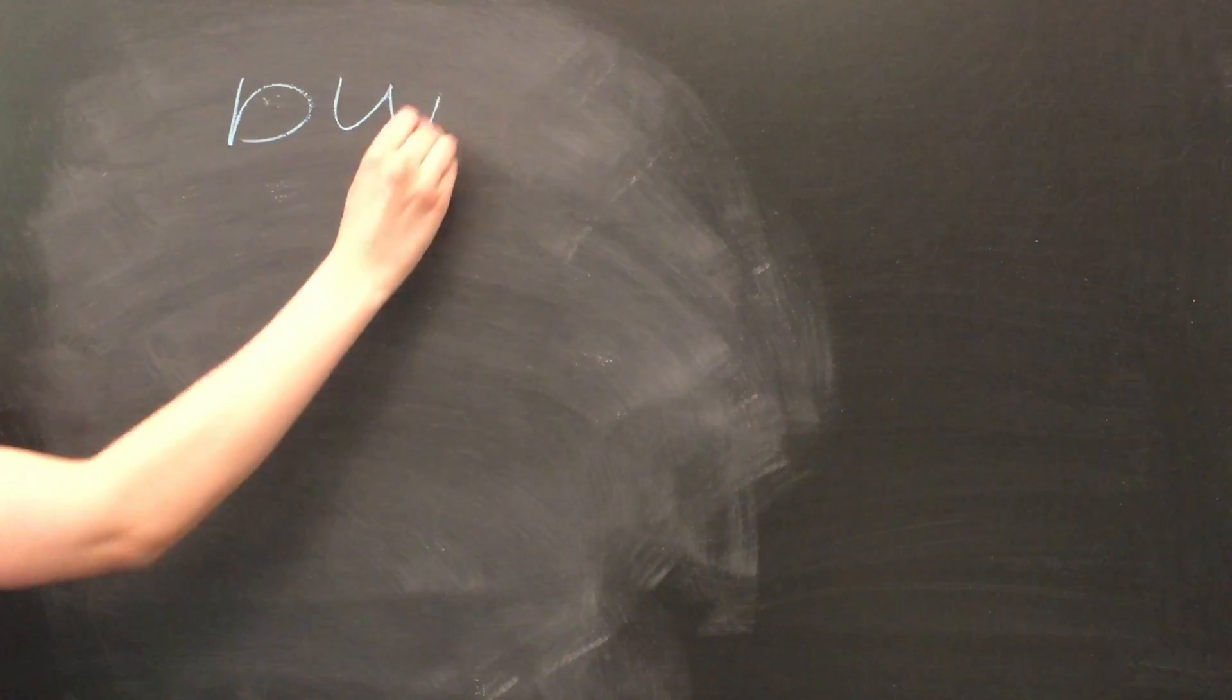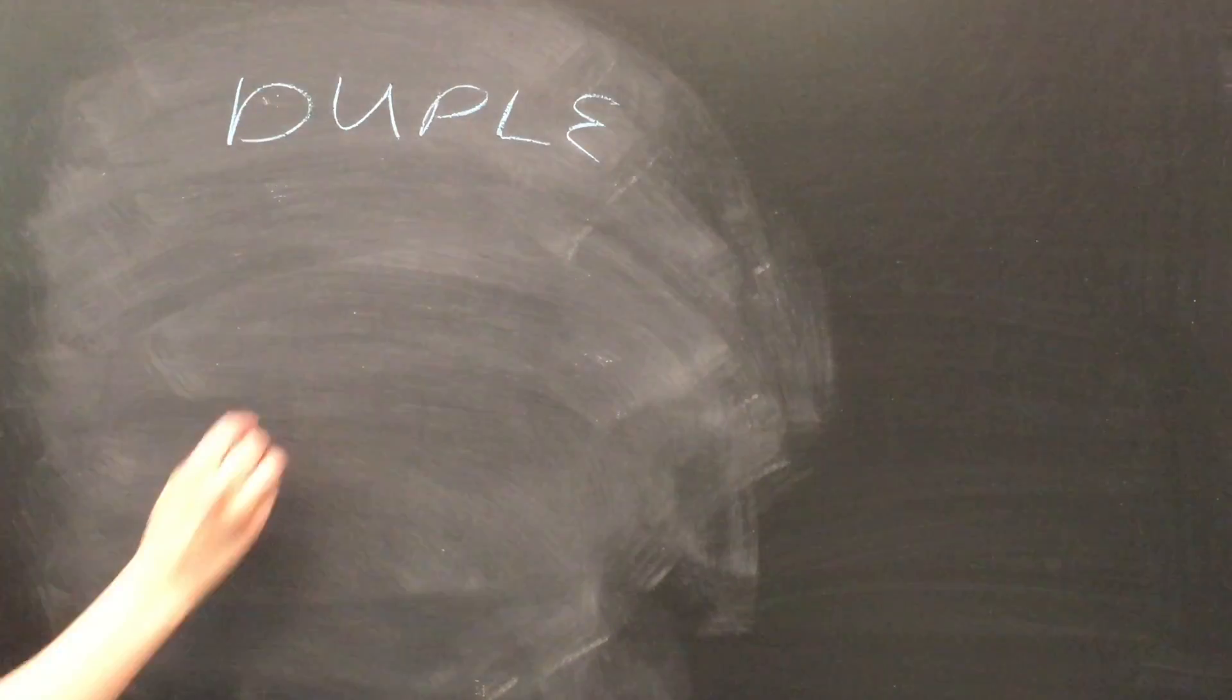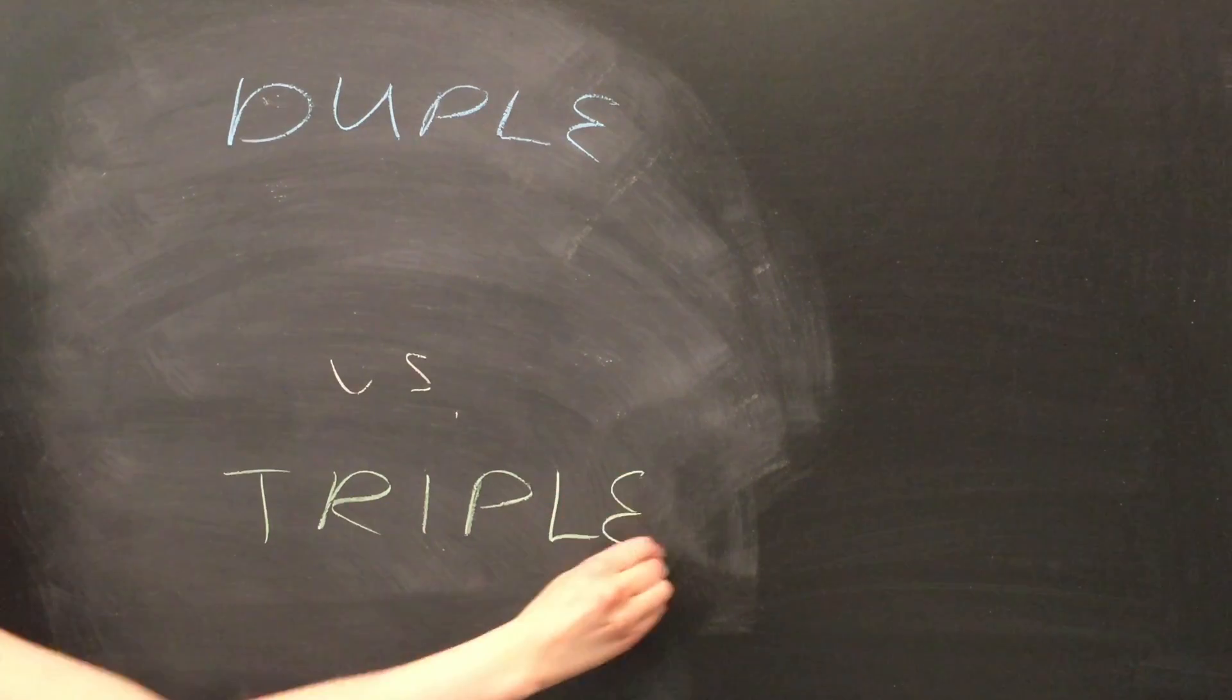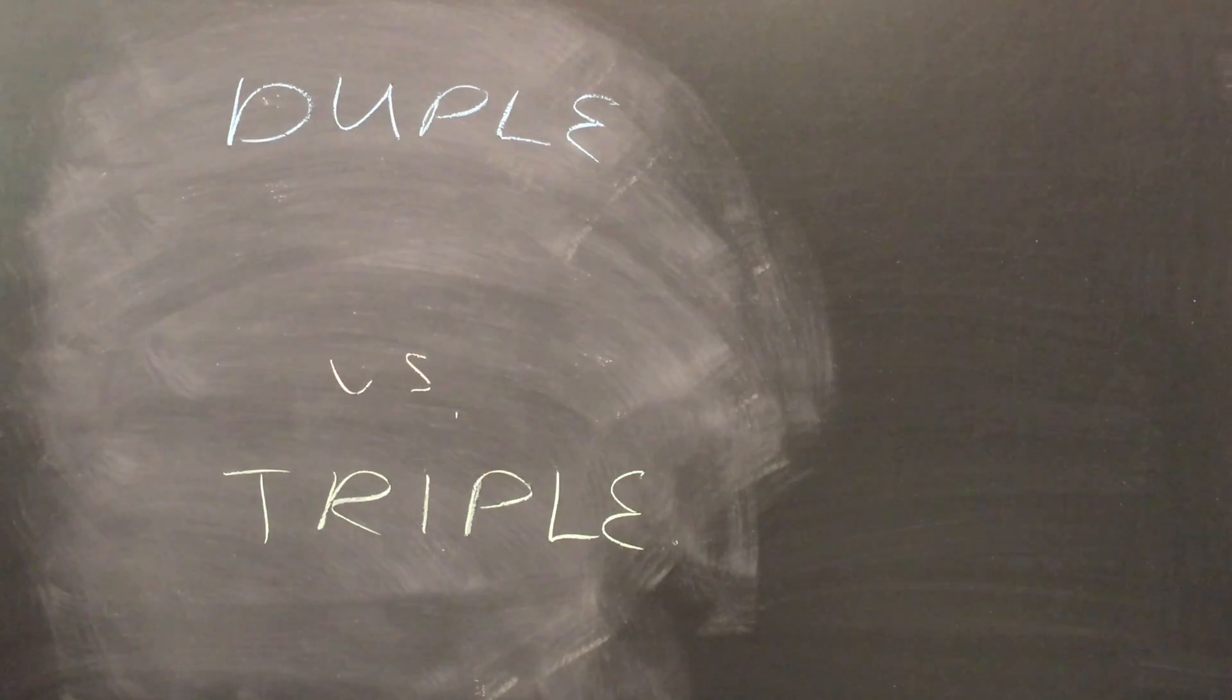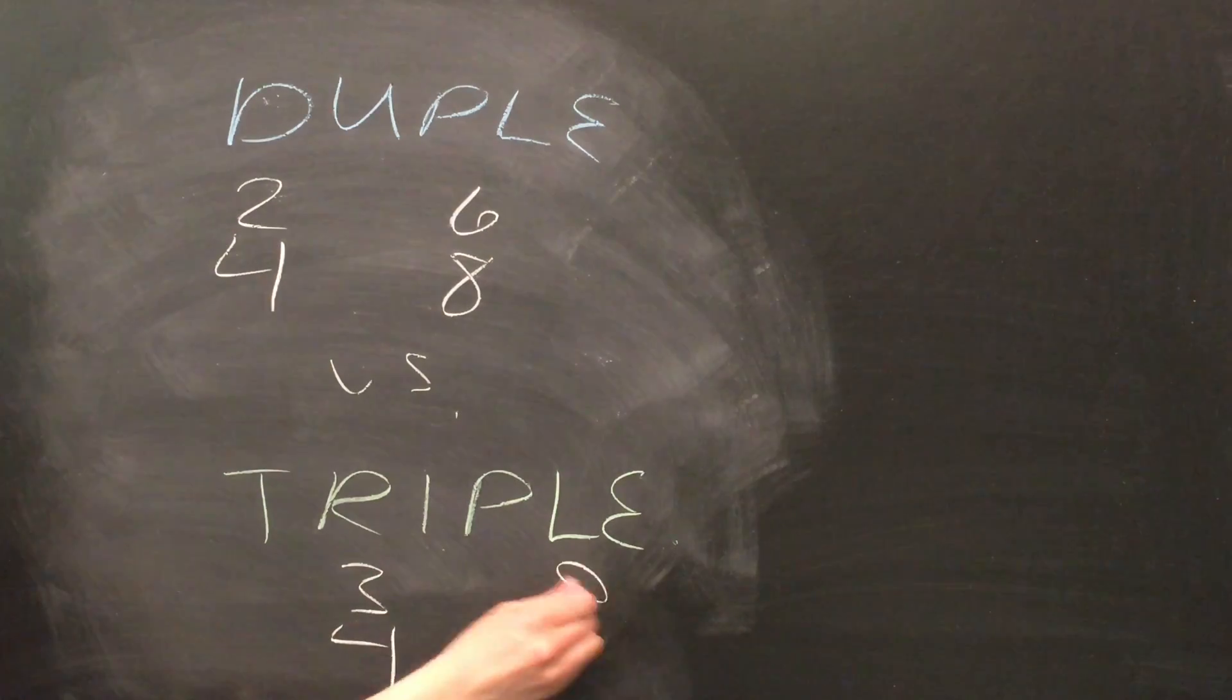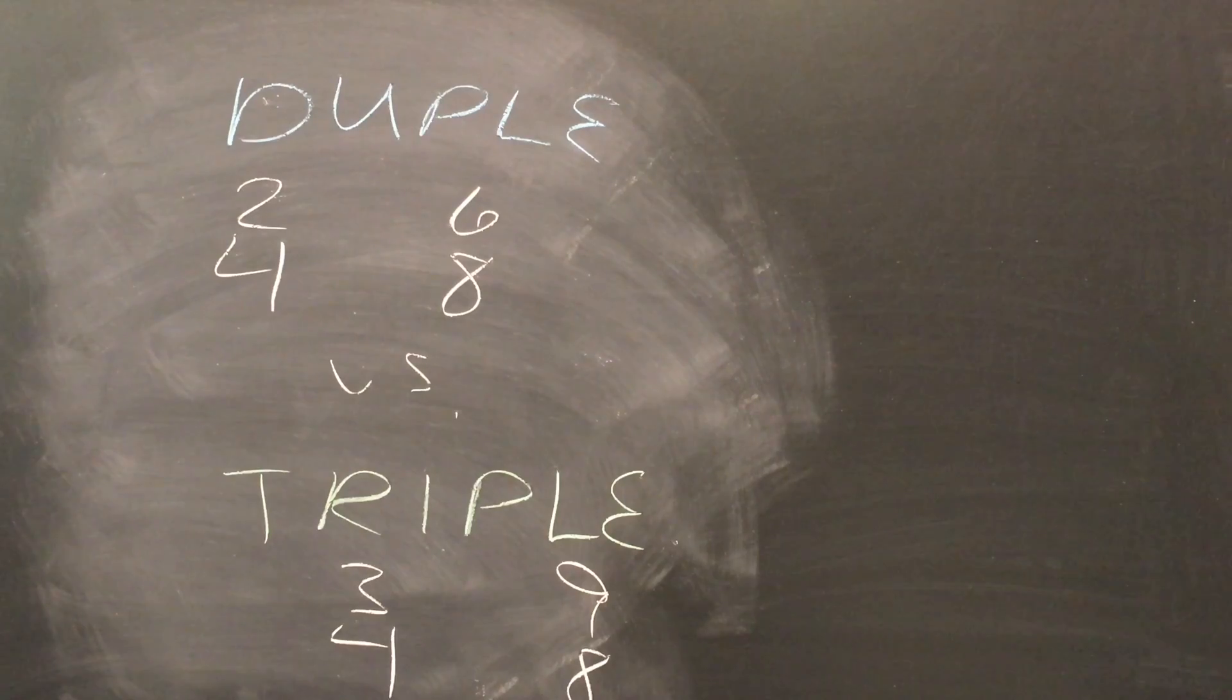There are two different types of meter, duple and triple, and two subtypes associated with each of those types, simple and compound. In duple meter, as the name implies, each measure is divided into an integer multiple of two beats. In other words, two divides the top number in the time signature. In triple meter, each measure is divided into an integer multiple of three beats. In other words, three divides the top number in the time signature.